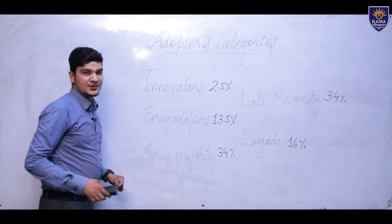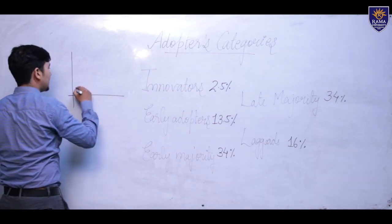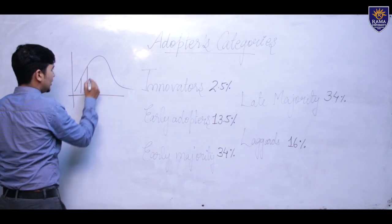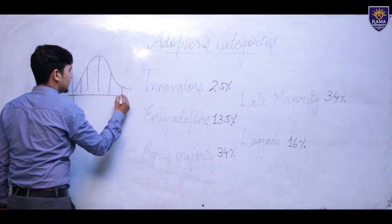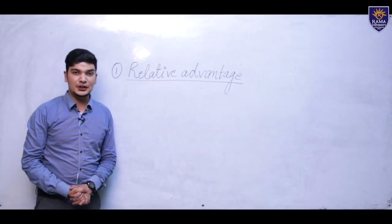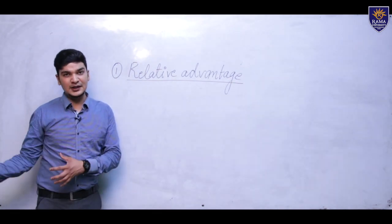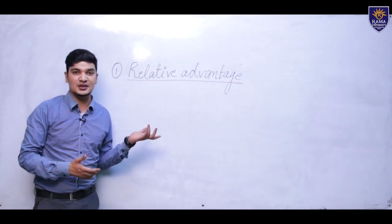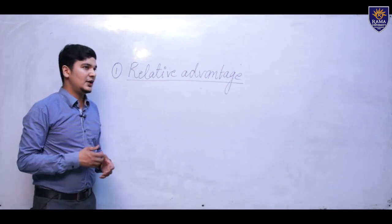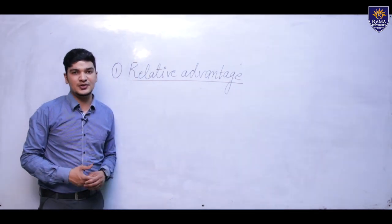The adopter category curve comes under a bell-shaped curve, covering innovators, early adopters, early majority, late majority, and laggards. The relative advantage of any innovation is the superiority of that innovation over the technology it supersedes. An innovation is more likely to be adopted if it is relatively more advantageous than the technology it has replaced.